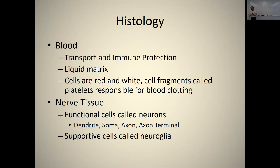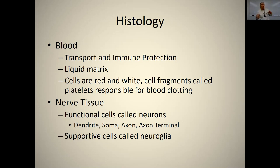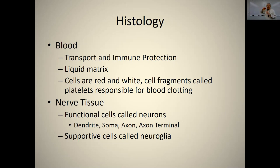Nerve tissue: the functional cells are called neurons, and their function is conduction of information. There are also supportive cells called glial cells or neuroglia that don't conduct but assist the neurons in various ways — we'll cover those in a whole chapter on nerve tissue. Nerve cells always have dendrites that receive information, a soma that integrates information, an axon that sends information, and axon terminals that give information to another cell.